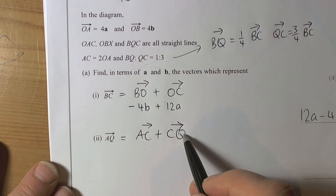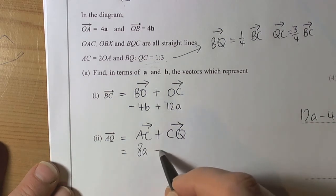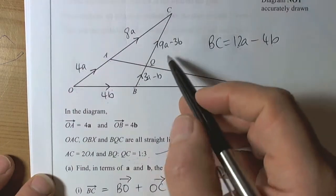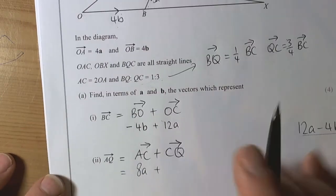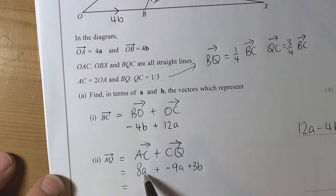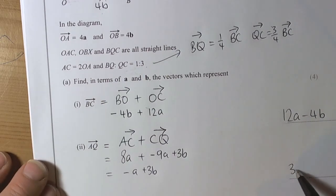C to Q must be the opposite of Q to C. So to go from A to C we know it was 8a. C to Q is going to be the opposite of 9a minus 3b, so that's minus 9a plus 3b. When we combine these vectors, 8a minus 9a is minus a, and we've got plus 3b. So our answer line is 3b minus a.